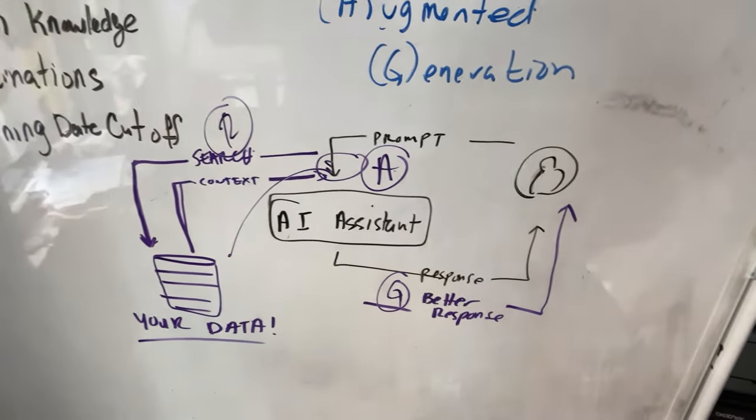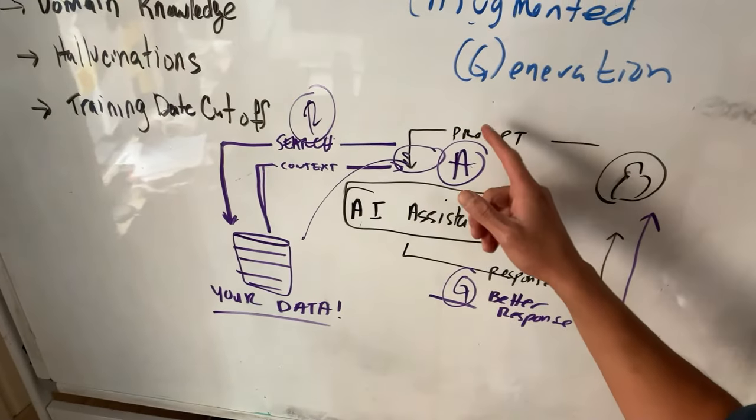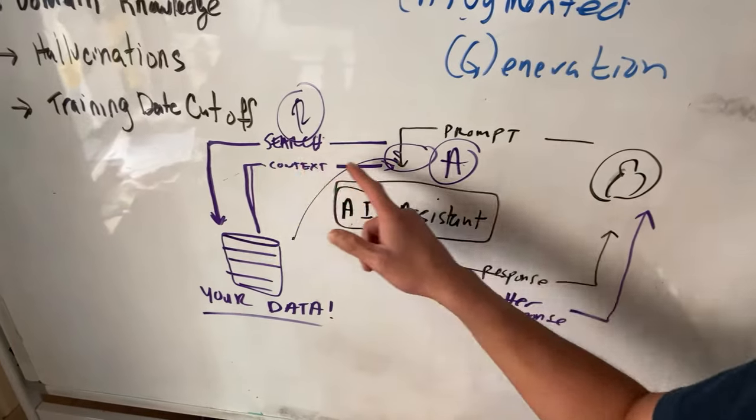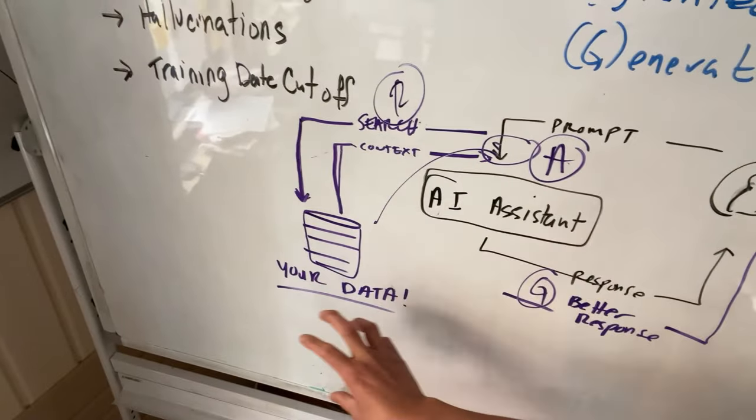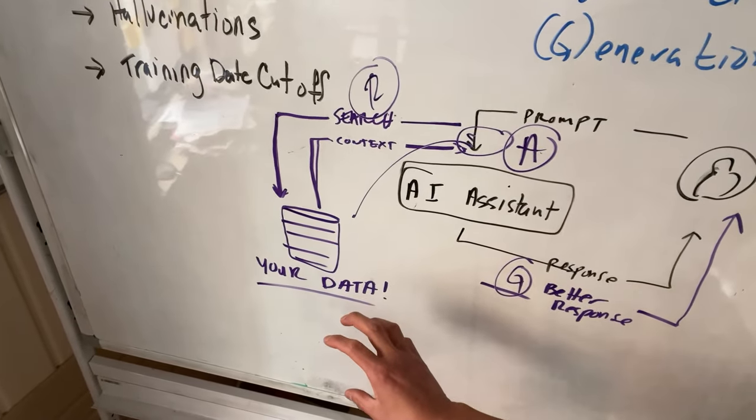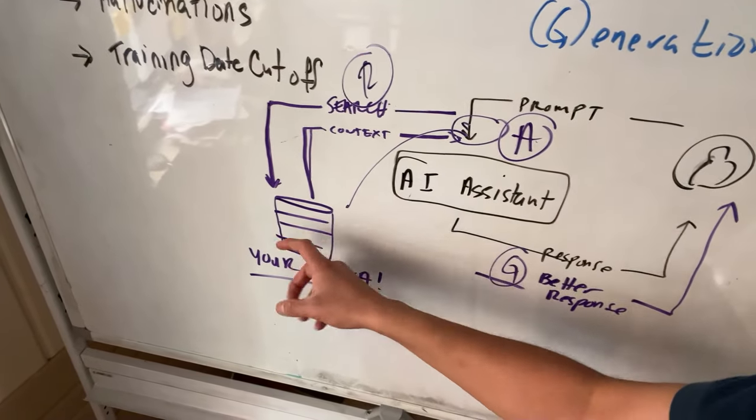In a RAG implementation, you're adding an additional step here. Before that prompt goes into the AI assistant, we have a search that hits a corpus of data. Now, this is going to be your data, your own documents, and other relevant information that you want to make available to the AI assistant.